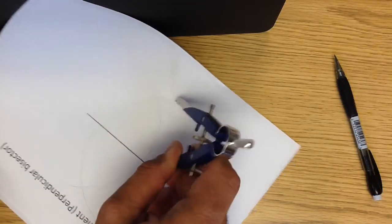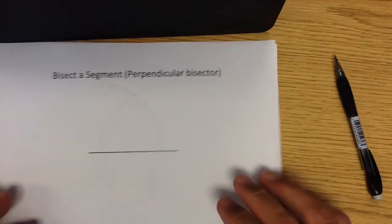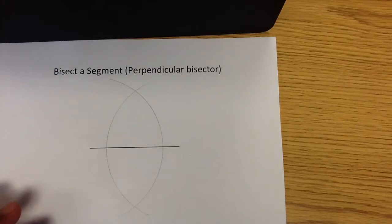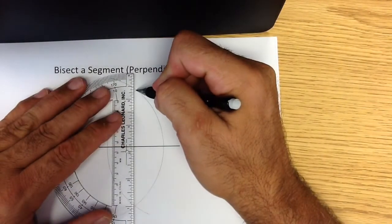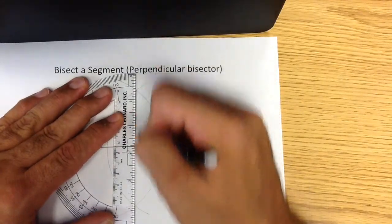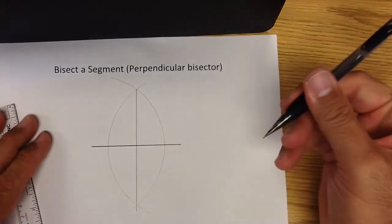So in this case I have two intersecting arcs and when I connect them with my straight edge I'm going to realize that what I've just done is created the perpendicular bisector. Please make sure you're always using a straight edge.